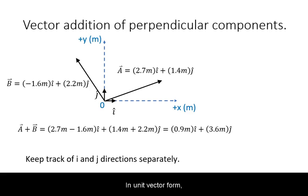In unit vector form, you still keep the directions separate, but you can combine the two equations, keeping track of the i and j components at the same time.